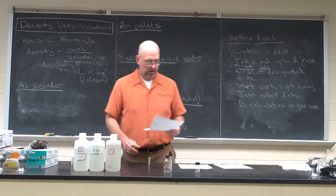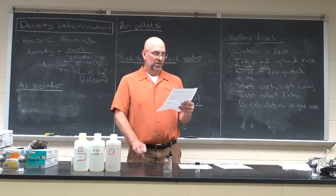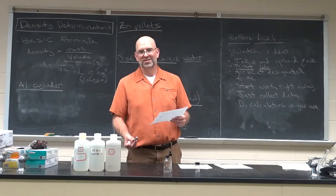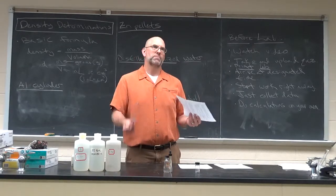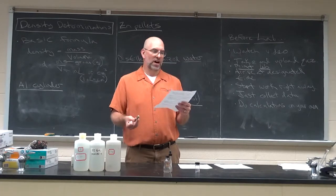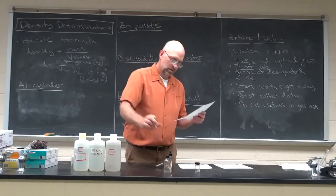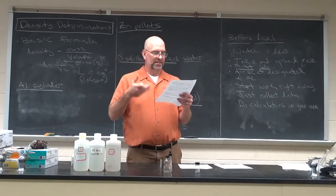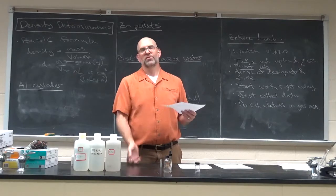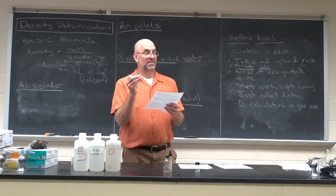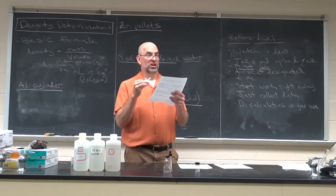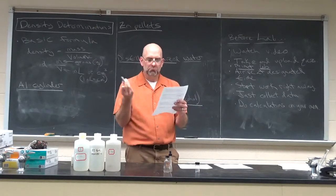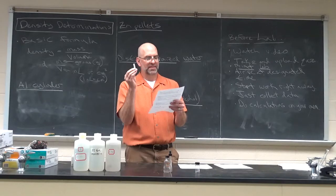Let's go through the first one. The procedure says: determine the mass of an empty, dry 50-milliliter beaker — that's the first step in almost every one of these. Record the mass of the beaker empty and dry. Then put the aluminum cylinder in with the beaker and record the mass of the two things combined. Subtract those two to get the mass of the aluminum cylinder. We're doing that for a reason — some of the other ones are going to be liquids, so we're not just going to zero out the balance.